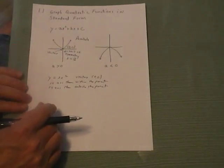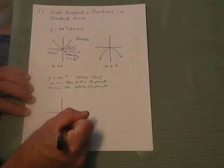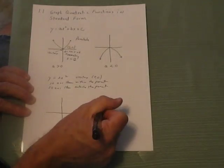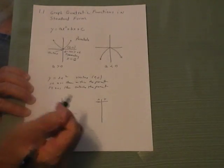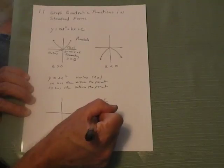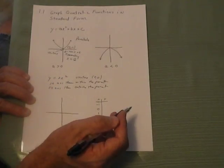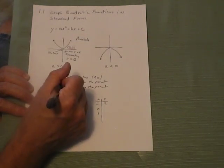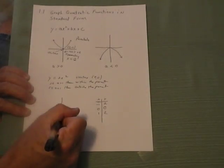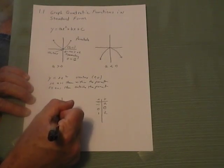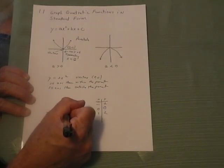Let's graph y equals 2x squared and compare it to the parent. To graph this, we need to come up with some points, so we'll make an xy table and plot some points. Using x values of negative 1, 0, and 1: negative 1 squared is 1 times 2 is 2; 0 squared times 2 is 0; and 1 squared times 2 is also 2. So we have points (−1, 2), (0, 0), and (1, 2).